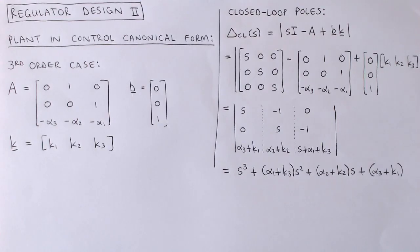We start by looking at how to design the feedback gain for a plant in control canonical form. To illustrate the concept, we do the development for a general third order system, but it is possible to prove that the results hold for any order.